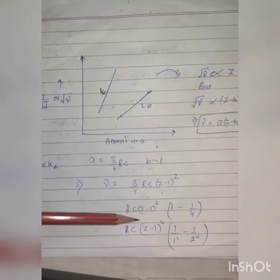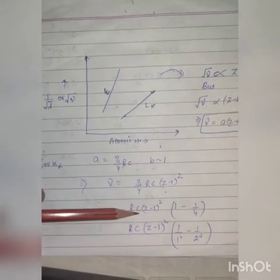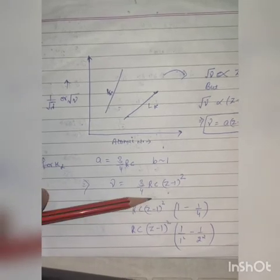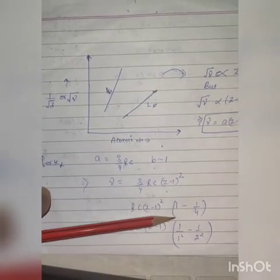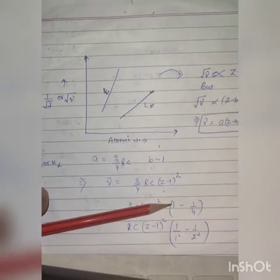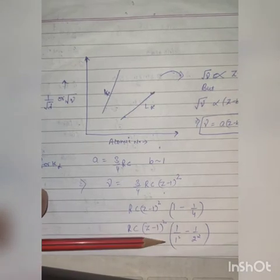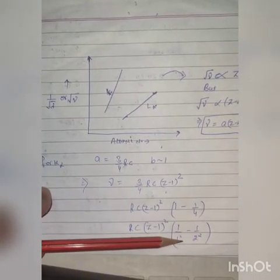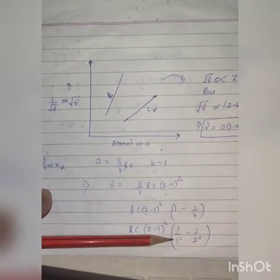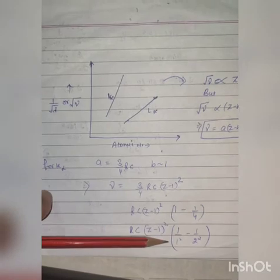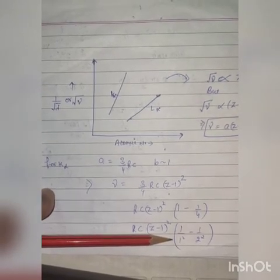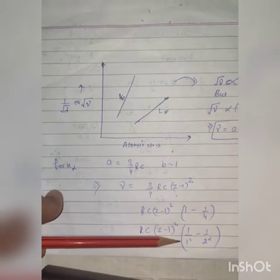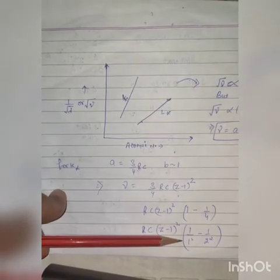This equation is similar to the formula for the frequency of spectral lines of the hydrogen atom obtained from Bohr's theory, expressed as (1/1² − 1/2²).